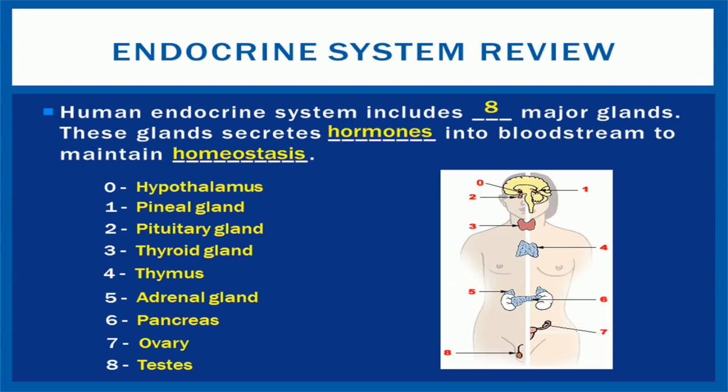The major glands are the hypothalamus, pineal glands, pituitary glands, thyroid glands, thymus, adrenal glands, pancreas, ovary, and testes. These glands work together to regulate bodily processes and functions using chemical messengers called hormones.